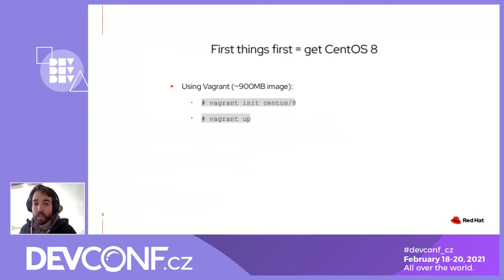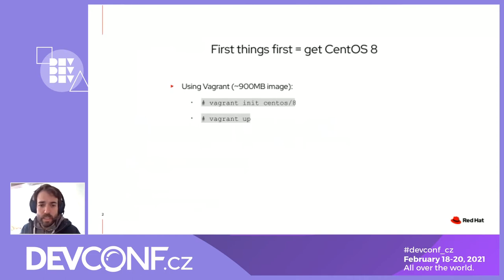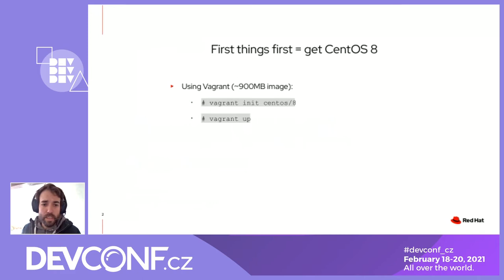This workshop is going to walk you through converting a CentOS 8 system. For those who haven't prepared for this, please get your CentOS 8 machine started or download it right now. This Vagrant box is 900 megabytes, so it can take a while to download.